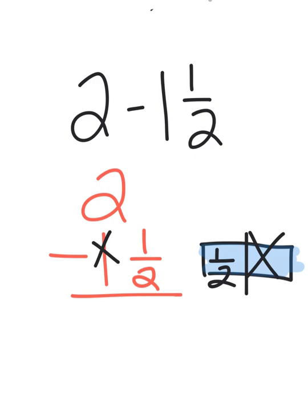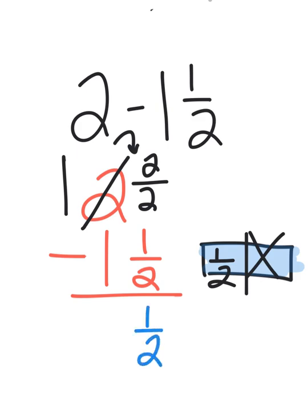So if I have 2 minus 1 1/2, here's what has to happen. I cannot subtract 1/2 from nothing. So I'm going to borrow from my whole. I'm going to take 2, I'm going to leave a whole, and I'm going to just rewrite 1 whole as 2 halves, right? Because it's still 2. And then I can go ahead and subtract 2 halves minus 1 1/2 is 1/2, and 1 minus 1 is nothing. So my picture matches my equation.